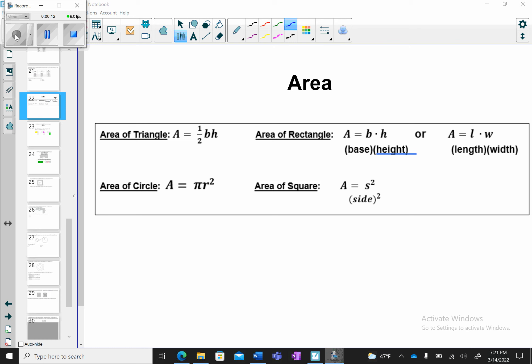The area of the triangle is 1/2 base times height. Area of a rectangle is base times height, or you can think of it as length times width. Area of a circle is πr², r being the radius. And the area of a square is the side squared, because all the sides are the same.